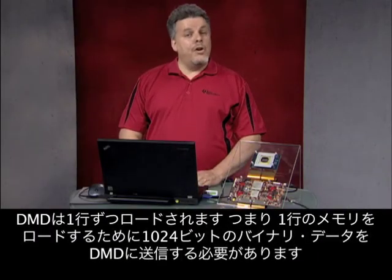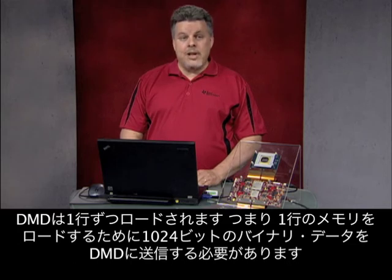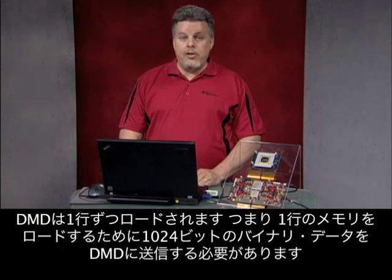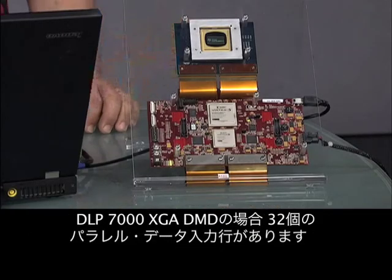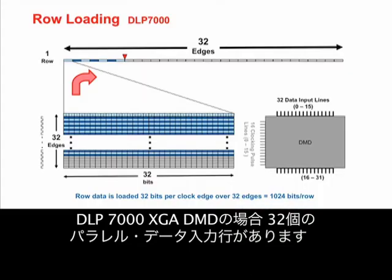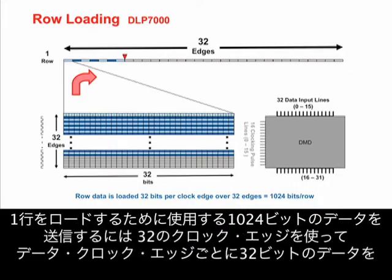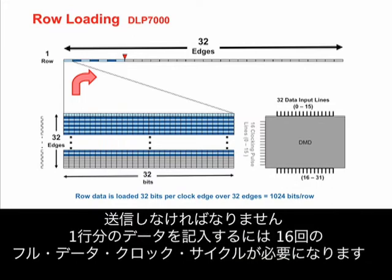DMDs are loaded one row at a time. This means that 1024 bits of binary data must be sent to the DMD in order to load the memory in one row. For the DLP 7000 XGA DMD, there are 32 parallel data input lines. In order to send the 1024 bits of data used to load the row, we must send 32 bits of data per data clock edge over 32 clock edges. This makes 16 full data clock cycles necessary to clock in one row's worth of data.